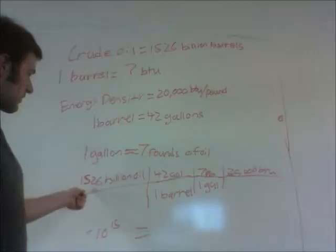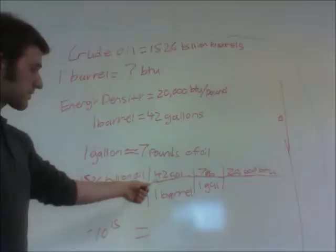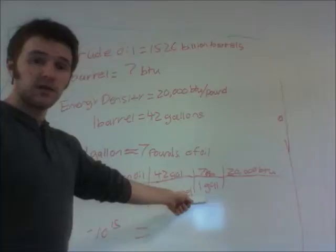So you go down here, and you have 15.26 billion barrels, multiplied by 42 gallons per barrel, multiplied by 7 pounds per gallon, multiplied by 20,000 BTUs per pound.